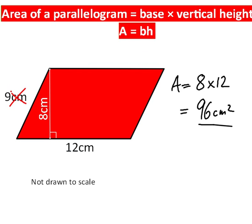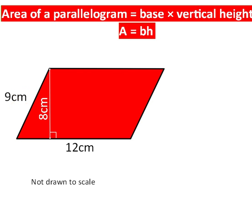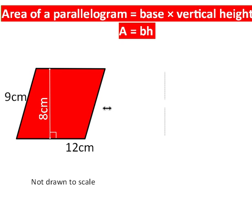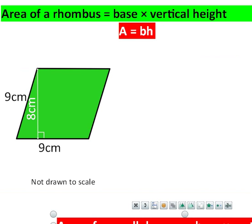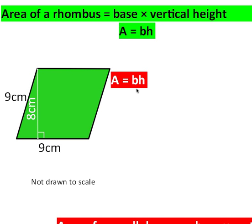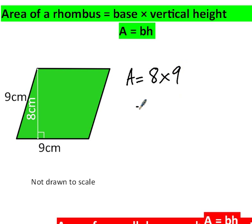Before we go on, how about if this had been a rhombus? So for example, if it was more like this, if I turn this into something that looks a bit more like a rhombus. The area of a rhombus is still base times vertical height, or A equals BH. So a worked example would look like this. The vertical height is eight still, and the base is nine. So if I do eight times nine, then I get seventy-two square centimeters.